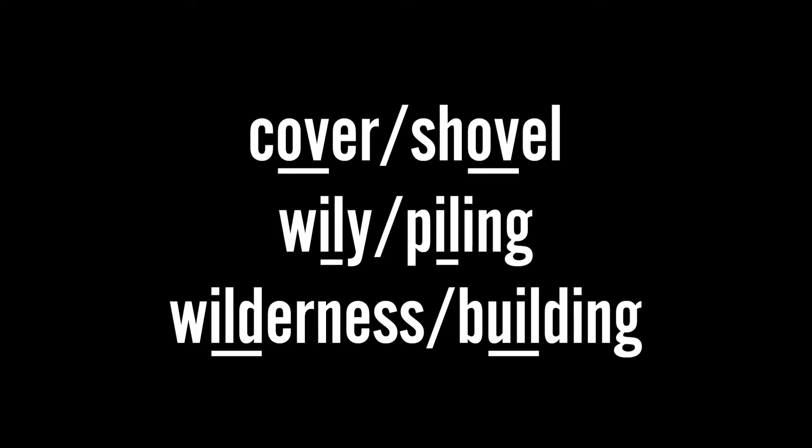Unstressed rhyme is when the words are multisyllabic, but only the last unstressed syllable rhymes — kind of like half a feminine rhyme. These do not make a perfect rhyme. For example: matter and lover. Next up we have half rhyme, which is feminine or three-syllable rhymes in which the accented syllable rhymes, but the following one or two unaccented syllables are different. So the stressed syllables rhyme, but the unstressed syllables that follow don't. For example: cover and shovel, wily and piling, or wilderness and building.